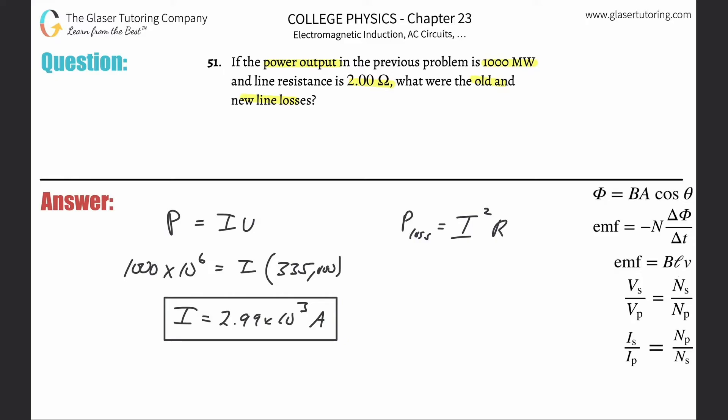So when I plug this in now, power loss is going to be equal to the current that I have, 2.99 times 10 to the third, that's going to be squared, and then multiply it by the 2. So this is now the power that's going to be lost. And here we get a power loss of about 1.78 times 10 to the 7.